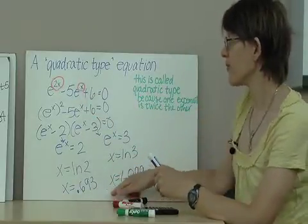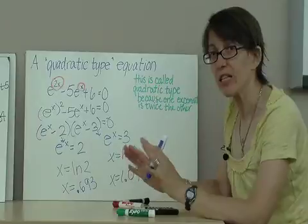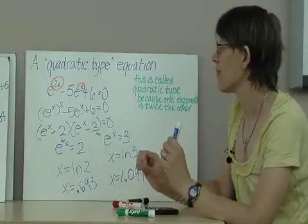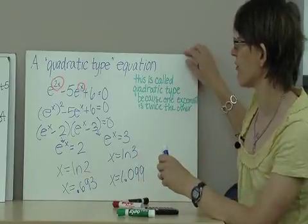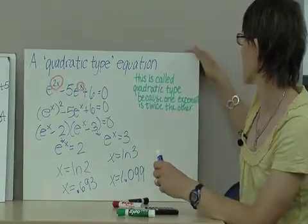Again, if you substitute these, you're going to get something that's pretty close to 0. But not exactly 0 because they're irrational numbers that I've rounded off. So that is the quadratic type equation.